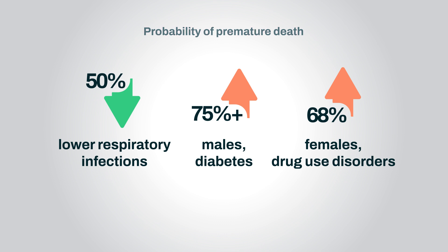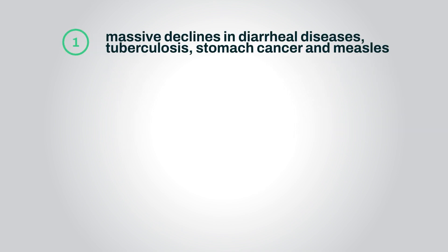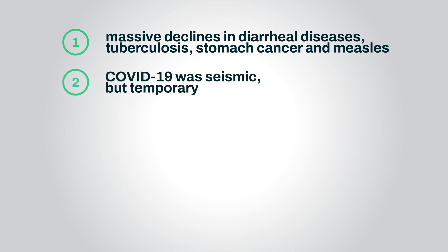So let's nail down these main findings. Number one, we've seen massive declines in mortality rates from diarrheal diseases, tuberculosis, stomach cancer, and measles, as well as considerable decreases in YLLs from those causes. Two, the COVID-19 pandemic was seismic but temporary, becoming the leading cause of death in 2021, but dropping to 20th place by 2023.